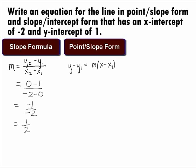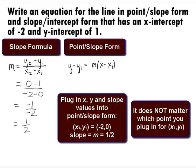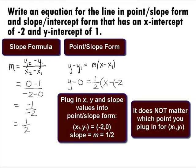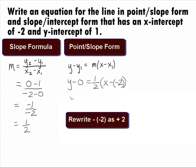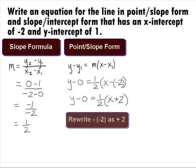Given a point (x1, y1) and the slope m, the point-slope equation of the line is y minus y1 equals m times the quantity x minus x1. We can use either point to plug in here. I went ahead and plugged in negative 2 for x1, 0 for y1, and 1 half for m. I got y minus 0 equals 1 half times the quantity x minus a negative 2. Rewriting the minus a negative 2 as plus 2, we get y minus 0 equals 1 half times the quantity x plus 2, which is the point-slope form of the line.